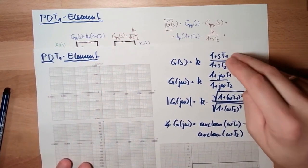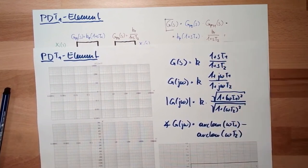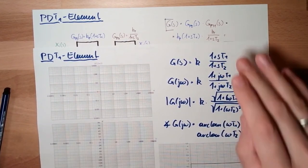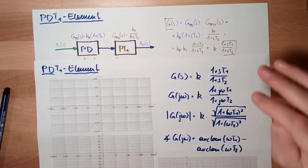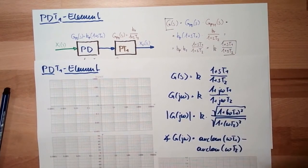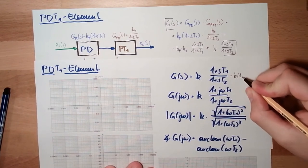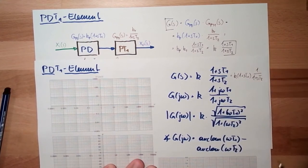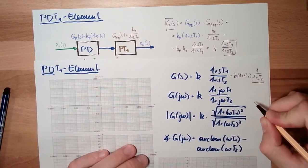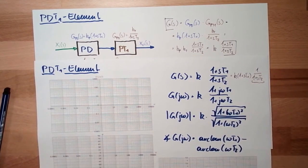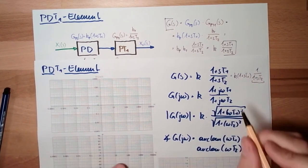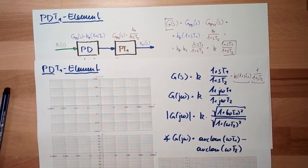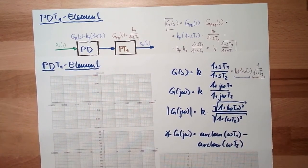This formula could also be written as K·(1 + S·T1) multiplied by 1/(1 + S·T2). So this is a PD element with gain K1, and this part is a PT1 element. These are the two combined elements.